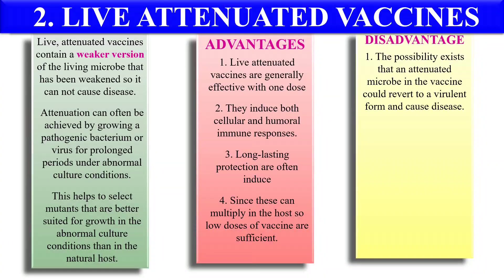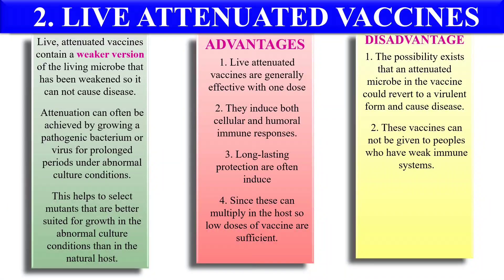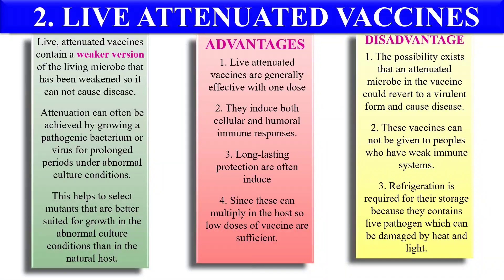Disadvantages: since we are using the live but attenuated pathogen, there are possibilities that sometimes this attenuated live pathogen can be converted back into an active live pathogen and cause disease. This is the main disadvantage — the pathogen can revert back to a disease-causing state. Additionally, these vaccines cannot be given to people with a weak immune system, because the live pathogen may cause side effects or disease in immunocompromised individuals. Also, refrigeration is required for their storage.